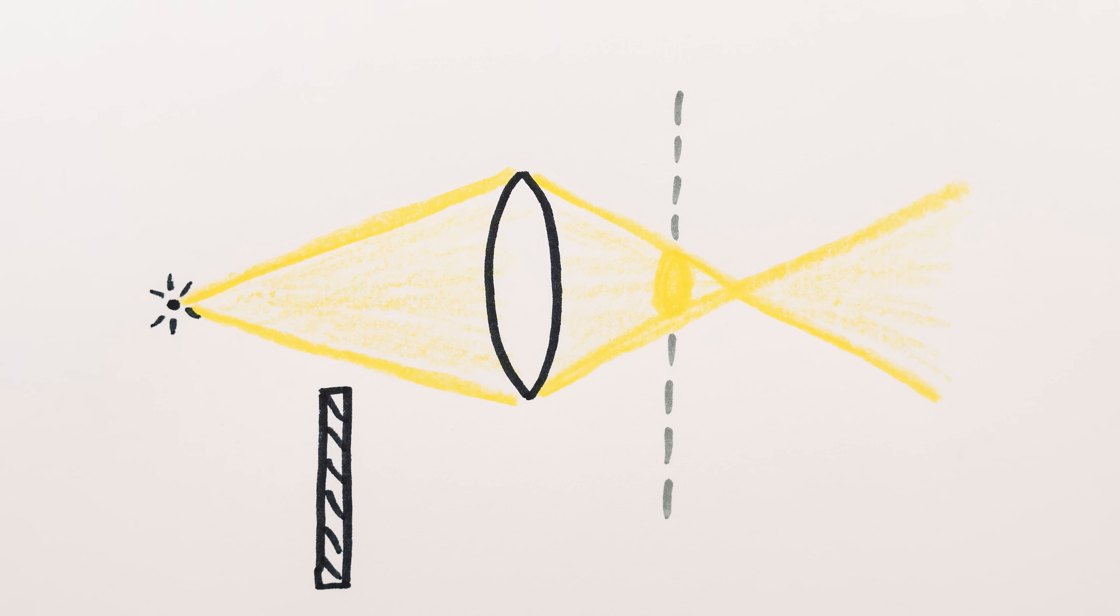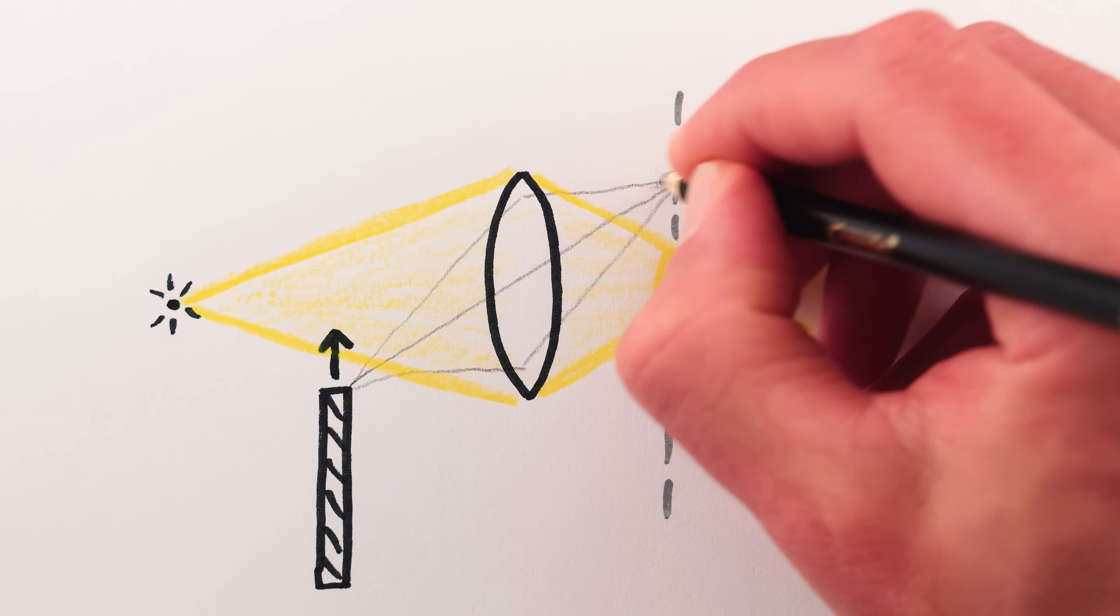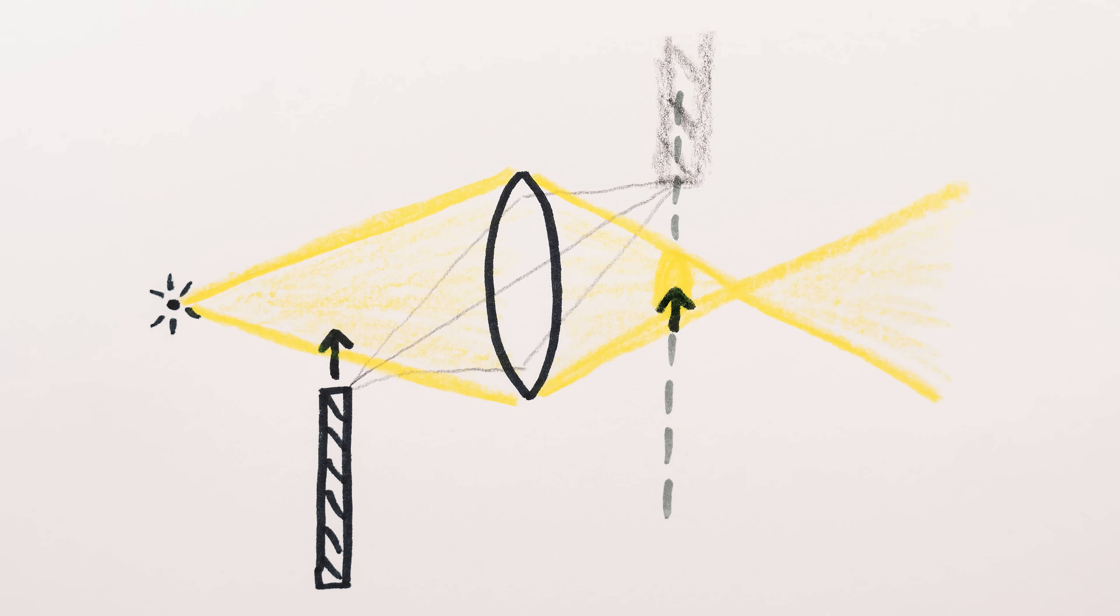When you put another object in between the light source and the lens, you block the outermost light rays generating the bokeh circle, which shrinks the bokeh from the opposite side. Well, it looks like the same side, but we have to remember that lenses flip images, so the image of the blocking object will be up here, and the bokeh shrinks from the opposite side relative to it.